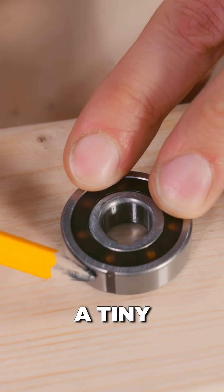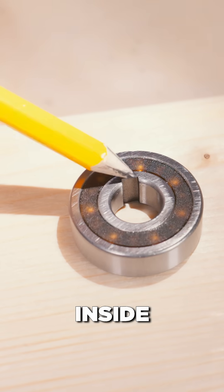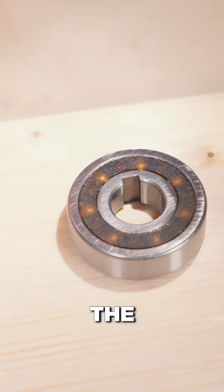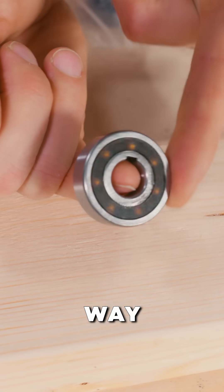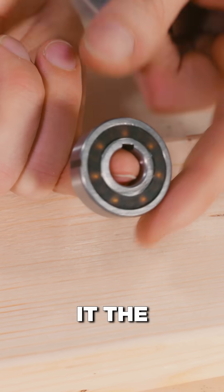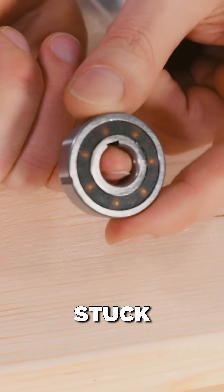If you see here on the outside, there's a tiny little slot, and here on the inside, there's a slot as well. The bearing rotates freely this way, but when I try to rotate it the other way, it immediately gets stuck.